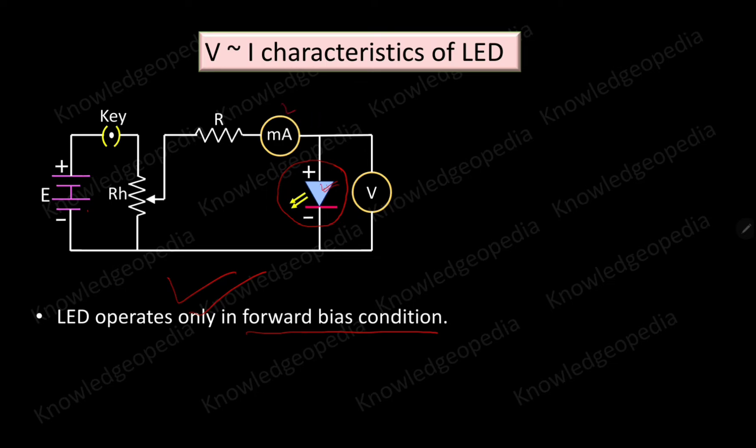Further, here this milliammeter is connected in series with the LED to measure the current passing through LED, and this voltmeter is connected in parallel to the LED which measures the voltage across the LED. Now, taking the readings from this voltmeter and this milliammeter, we will plot the V-I characteristics of the given LED.